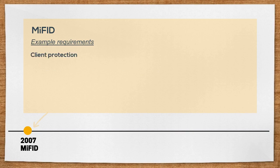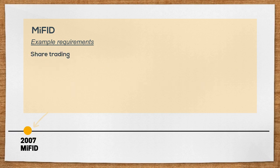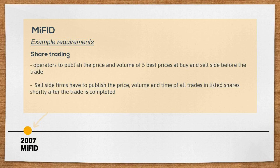MiFID requires firms to have clear procedures to categorize clients as eligible counterparties, professional, or retail clients, and have increasing levels of protection for the three groups when assessing suitability of each investment product. In share trading, MiFID requires operators to publish the price and volume of the five best prices at buy and sell side before the trade. Sell side firms have to publish the price, volume, and time of all trades in listed shares shortly after the trade is completed.